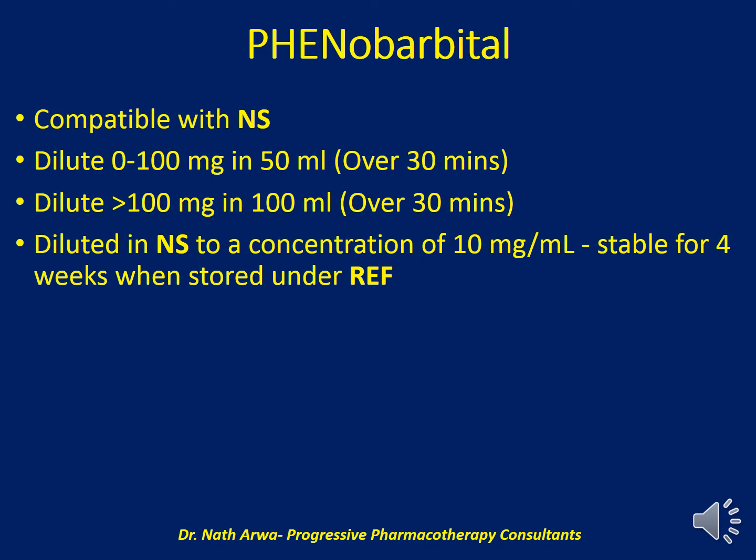Phenobarbital is compatible with normal saline — avoid using 5% dextrose. For doses of up to 100 mg, dilute in 50 ml of normal saline and infuse over half an hour after homogenizing. For doses exceeding 100 mg, dilute in 100 ml of normal saline, homogenize, and infuse over half an hour. When diluted in normal saline to a concentration of 10 mg per ml, such solutions are stable for 4 weeks under refrigeration.